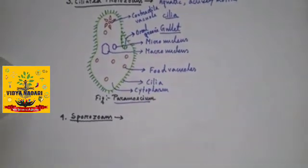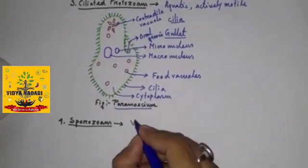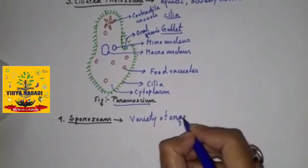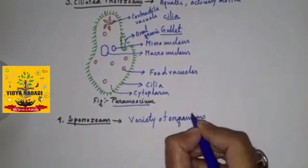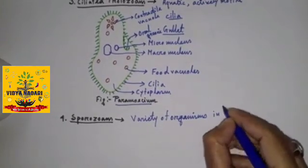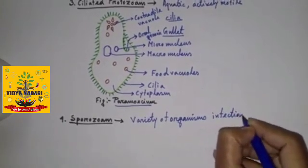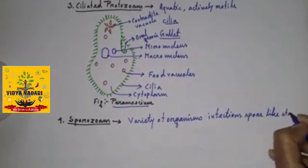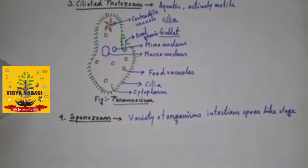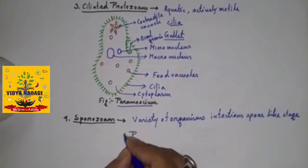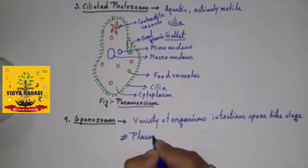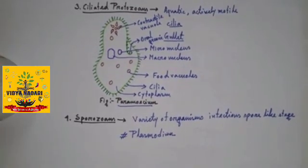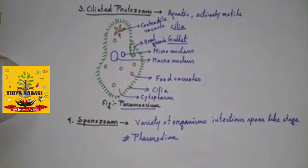Now sporozoans include variety of organisms that have an infectious spore-like state in their life cycle. Most notorious is Plasmodium. Plasmodium species which causes malaria, a disease which has a staggering effect on human population.